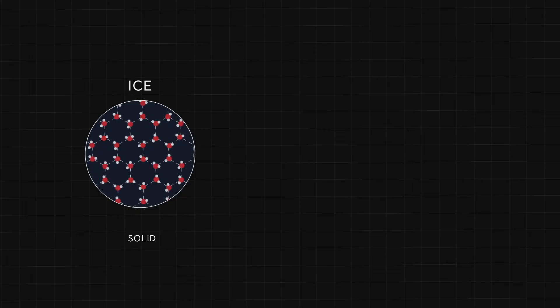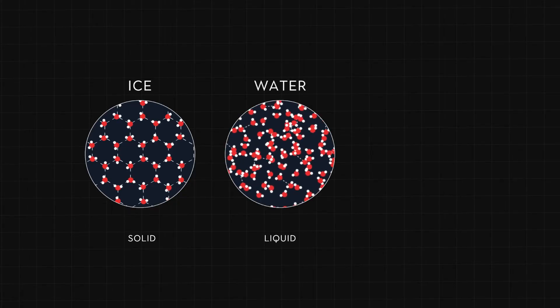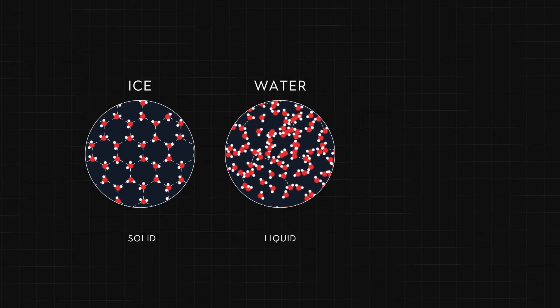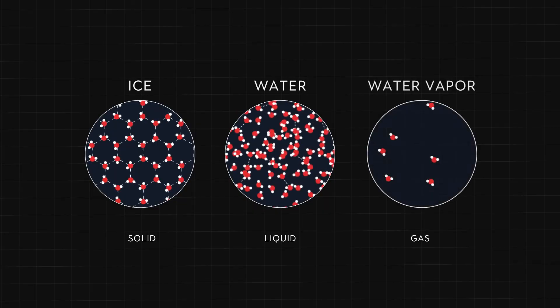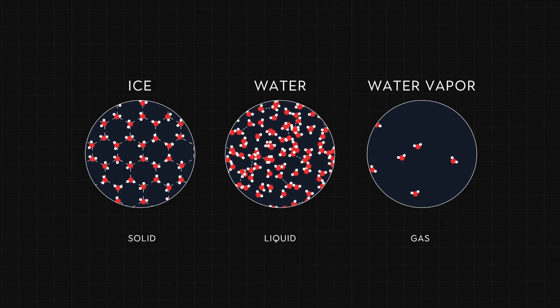Intermolecular forces are the attractions between molecules that determine how they behave together. Let's look at water again. When it's cold, the water molecules huddle together, forming a solid structure we call ice. This is because strong intermolecular forces, like hydrogen bonding, hold them in place. If we add heat, the kinetic energy of the water molecules increases. When the kinetic energy is high enough to partially overcome the intermolecular attractions, solid ice becomes liquid water. If we keep heating, there is enough energy to completely overcome the intermolecular forces, and gas — steam — is formed.